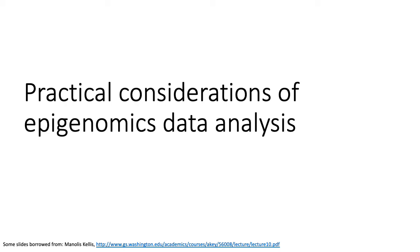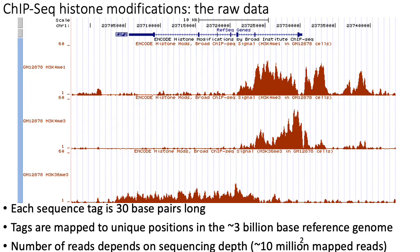We'll spend the next few minutes talking about some of the more practical considerations of epigenomics data analysis. Here's an example of ChIP-seq data for a human cell line around one particular locus, the E2F2 transcription factor. You can basically see different histone modifications — K4Me1, K4 trimethylation, and so on — and a map of where all the reads have been aligned to this locus.